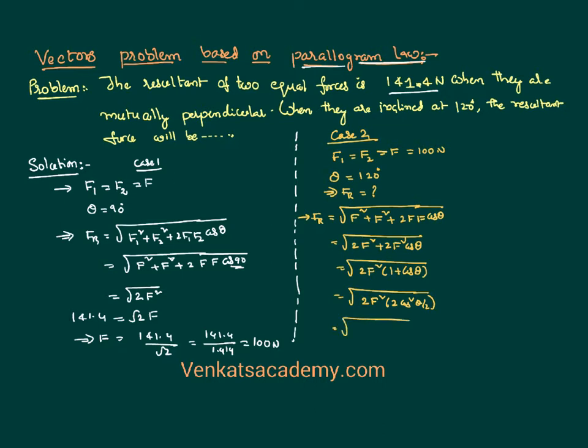So our answer is the square root of 4F²·cos²(θ/2), whose value is nothing but 2F·cos(θ/2). We need to calculate 2F·cos(θ/2). Let us substitute the data.